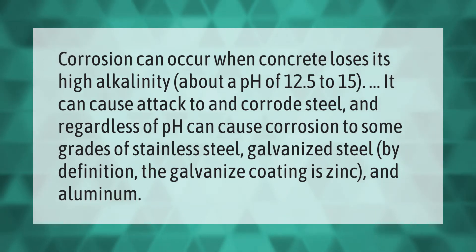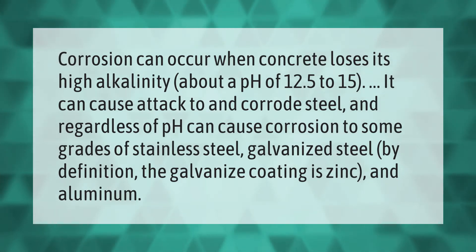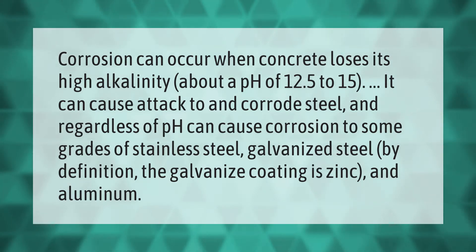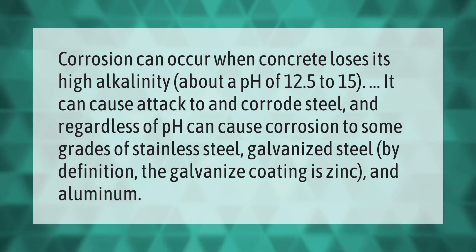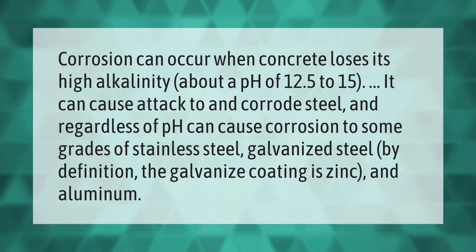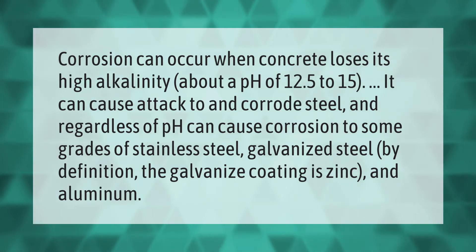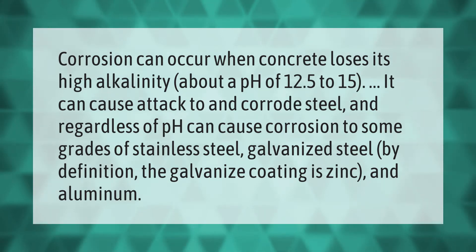Corrosion can occur when concrete loses its high alkalinity, about a pH of 12.5 to 15. This can cause attack to and corrode steel, and regardless of pH, can cause corrosion to some grades of stainless steel. By definition, galvanized steel's coating is zinc and aluminum.